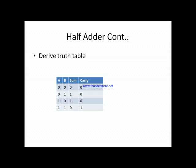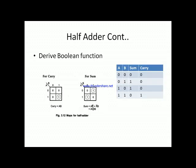Now we derive the Boolean functions for sum and carry. We consider the minterms that give logic 1. For sum, the combinations 01 and 10 give 1. For carry, only the combination 11 gives 1. The Boolean function from the truth table can be simplified using Boolean algebra postulates or the Karnaugh map method. Since we have two input variables, we use a two-variable K-map.